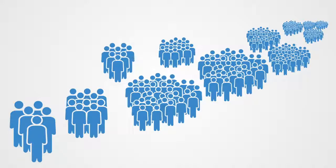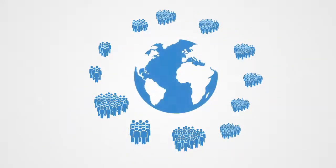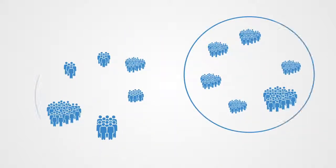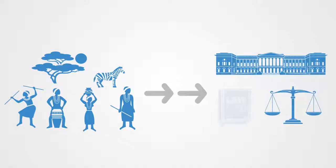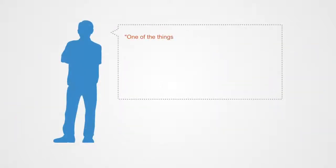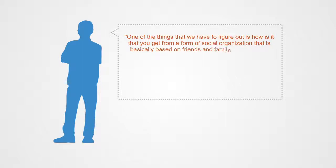A central question in the evolution of our socio-political organizations has involved the development of ever larger and more complex systems, going from small tribes to large empires and nation-states to today's global institutions. The key question is how we go from small political systems based on personal ties to modern political systems based on impersonal institutions. As Francis Fukuyama stated, the challenge is getting from a form of social organization based on friendships and family to one that is impersonal — where people are simply treated as citizens with equal rights and equal access to the state.